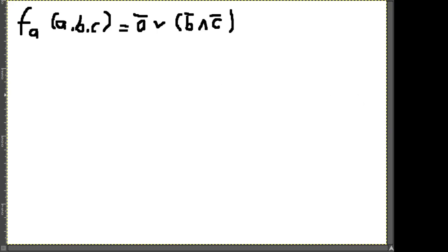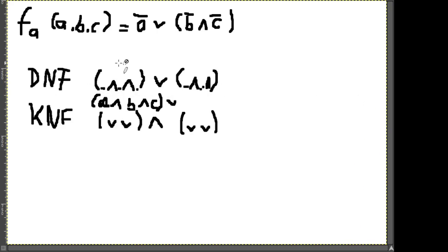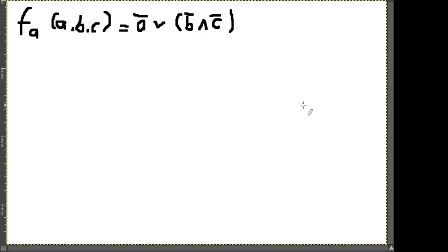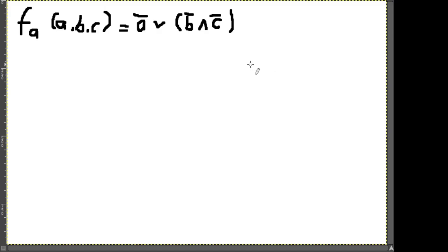Wir haben unsere Ausgangsformel und wissen nun, dass wir auf eine Form kommen müssen mit allen Eingangsvariablen. Es gibt diverse Rechen- und Umformungsregeln, die den Wahrheitswert nicht verändern. Es ist immer wichtig: der Wahrheitswert darf nicht verändert werden.